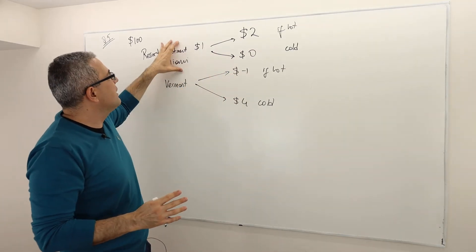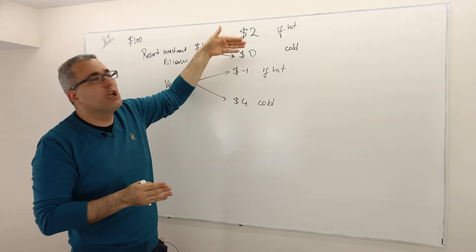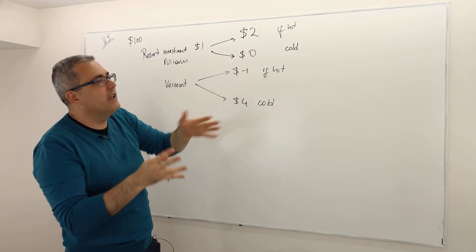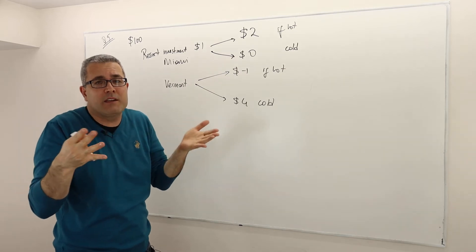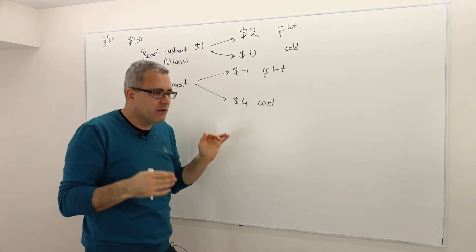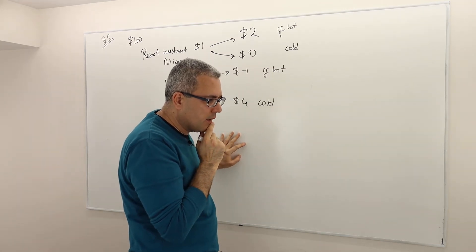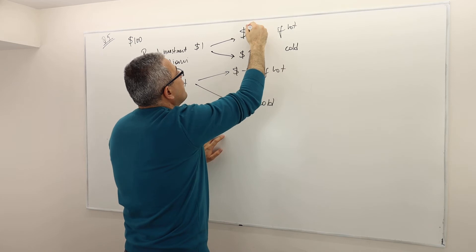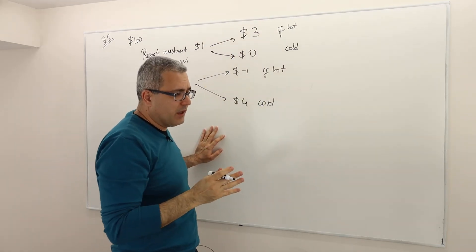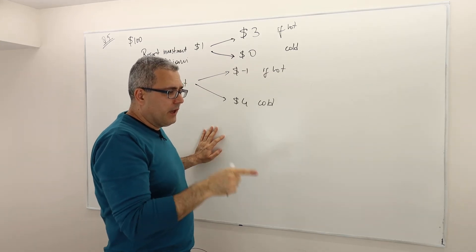In Miami you may win or lose, but at least the outcomes are closer to each other. In Vermont the outcomes are highly far apart. But nevertheless, all that matters is the expected value. A student (Vladimir) points out it should be $3 for Miami if hot, and the instructor confirms the correction.